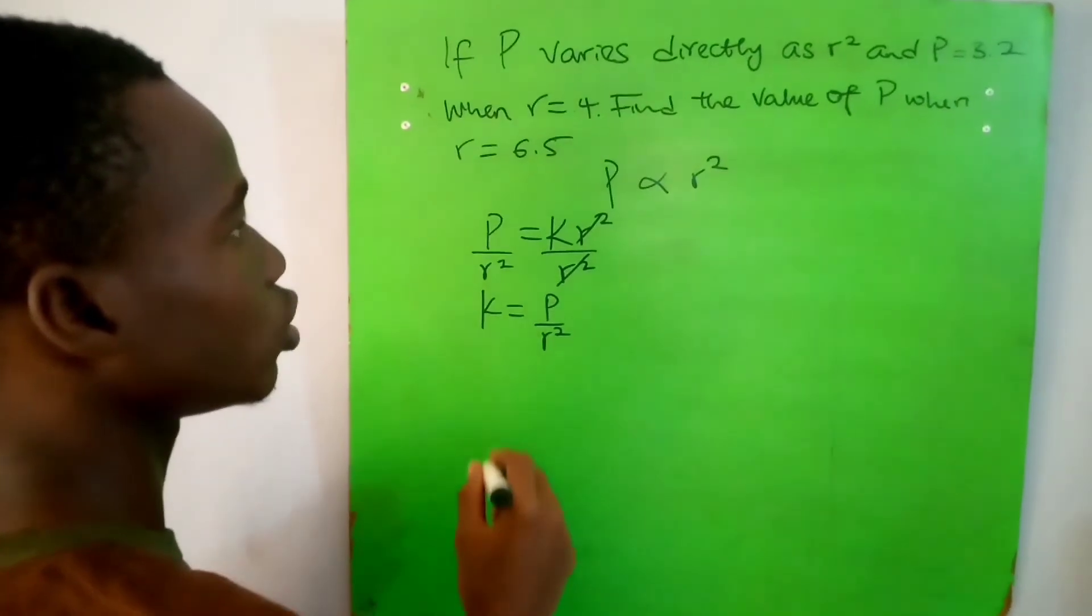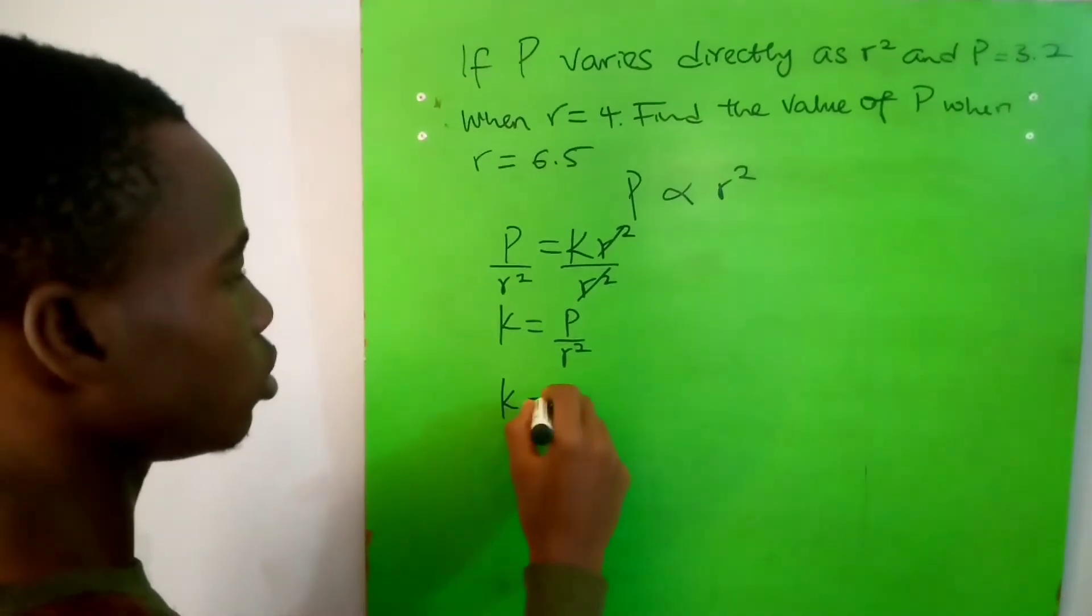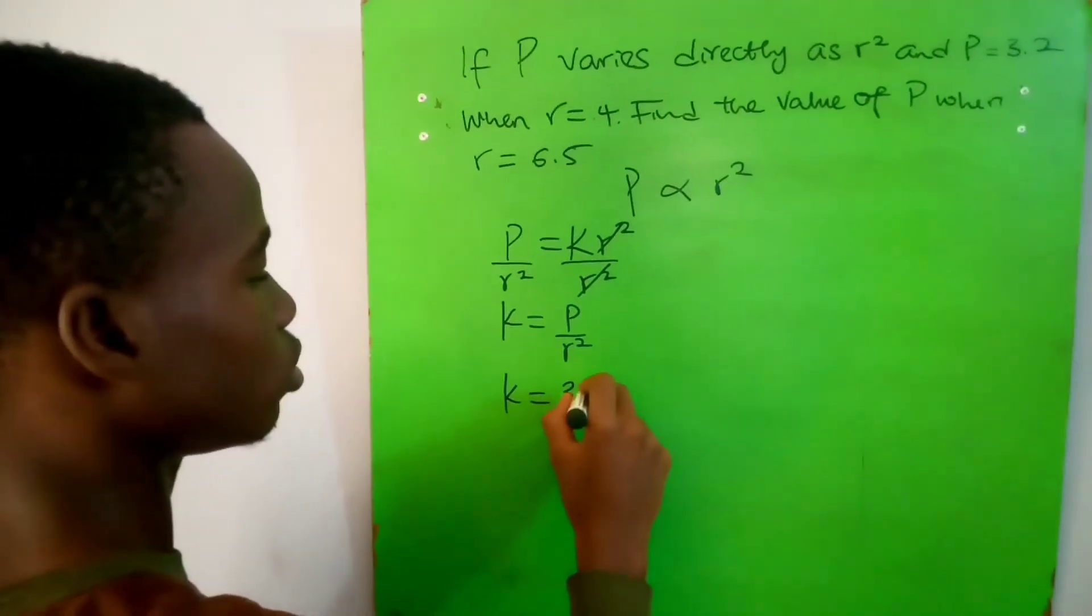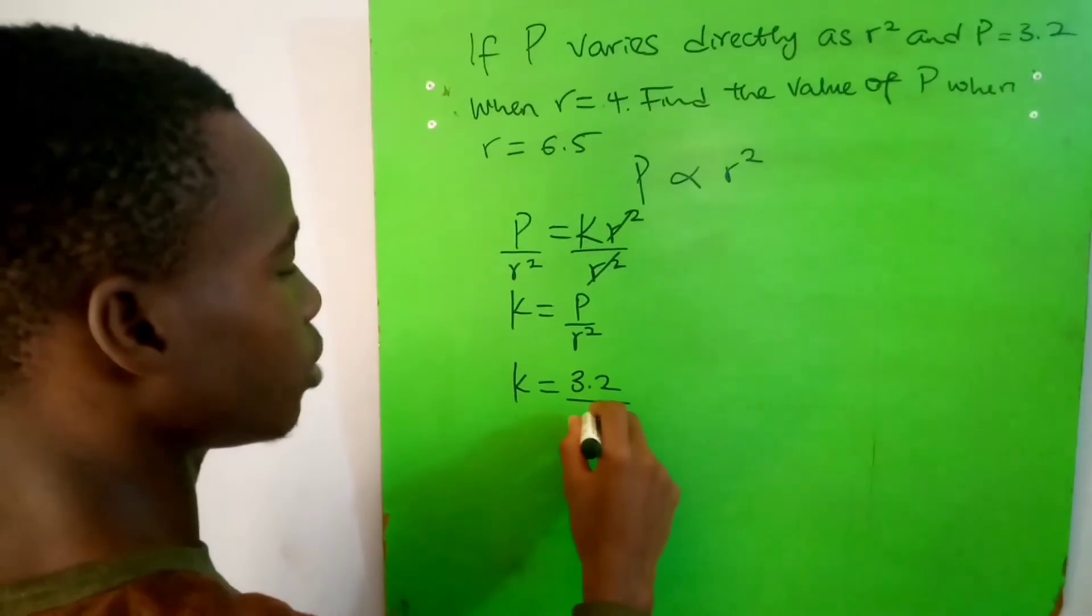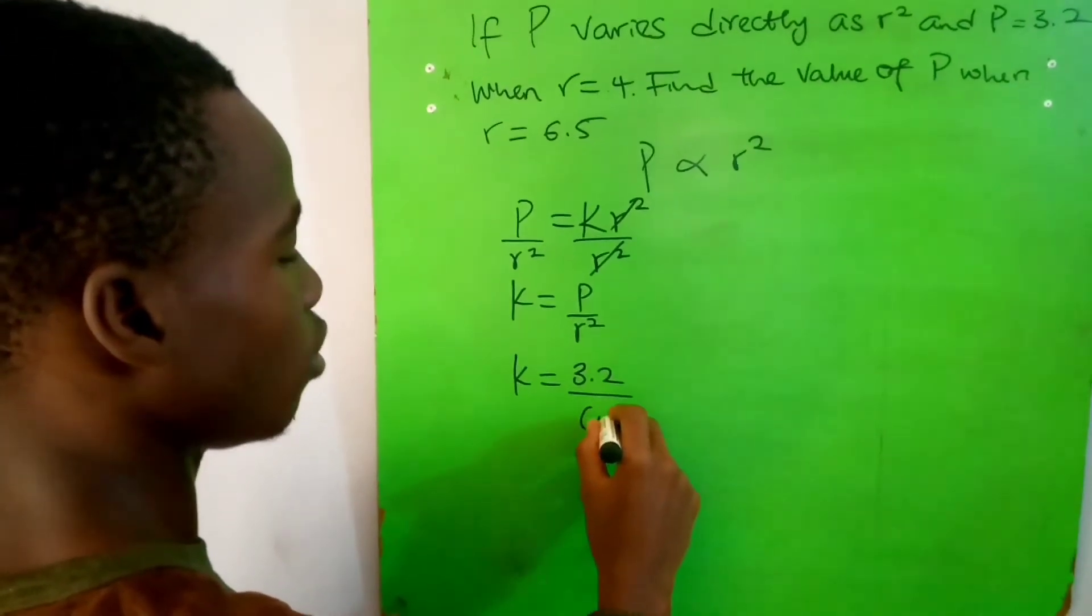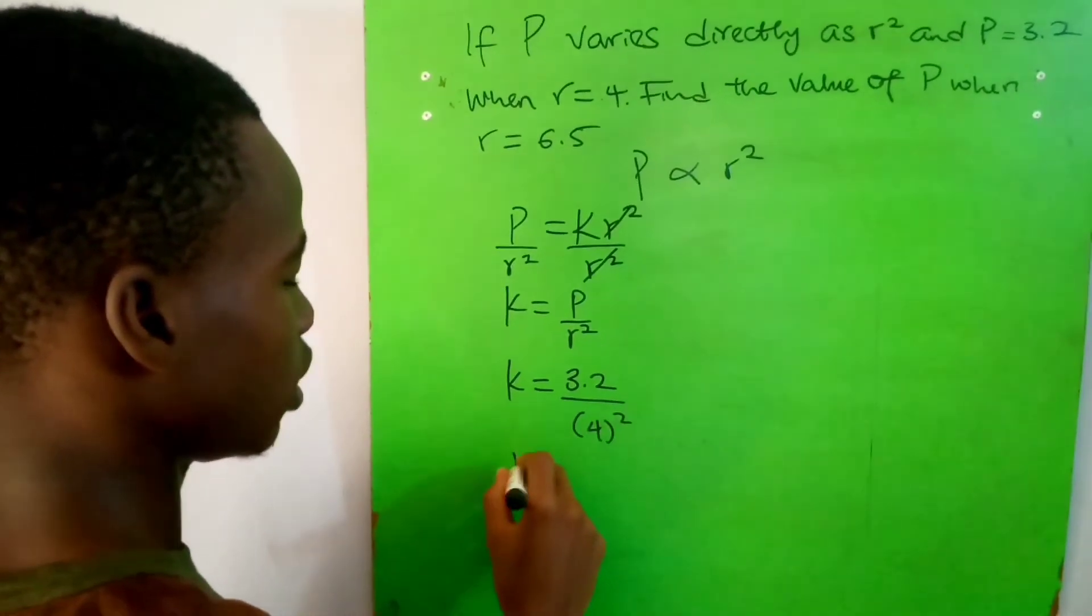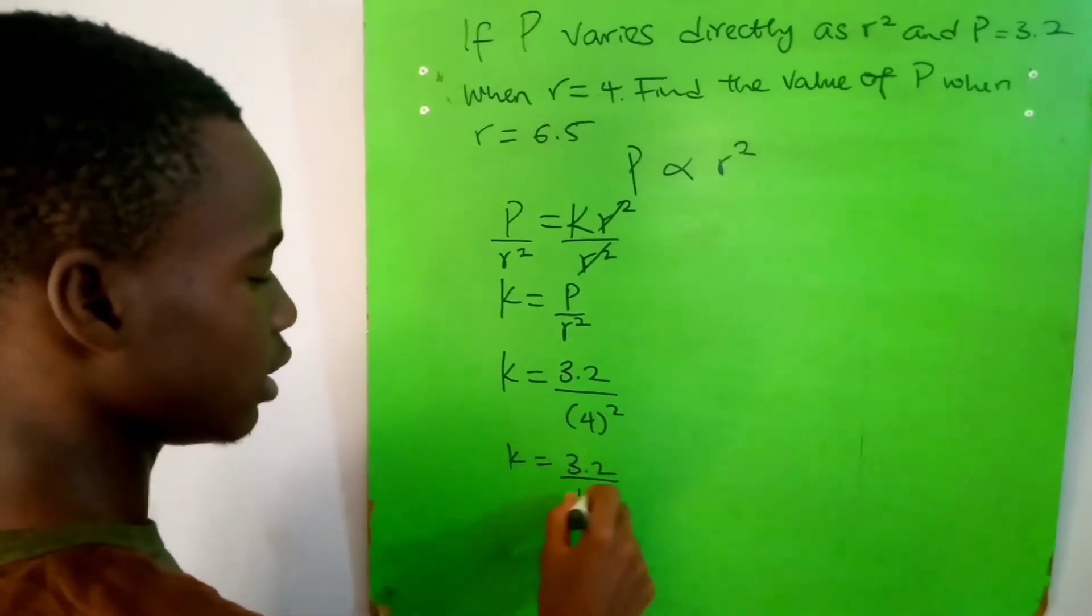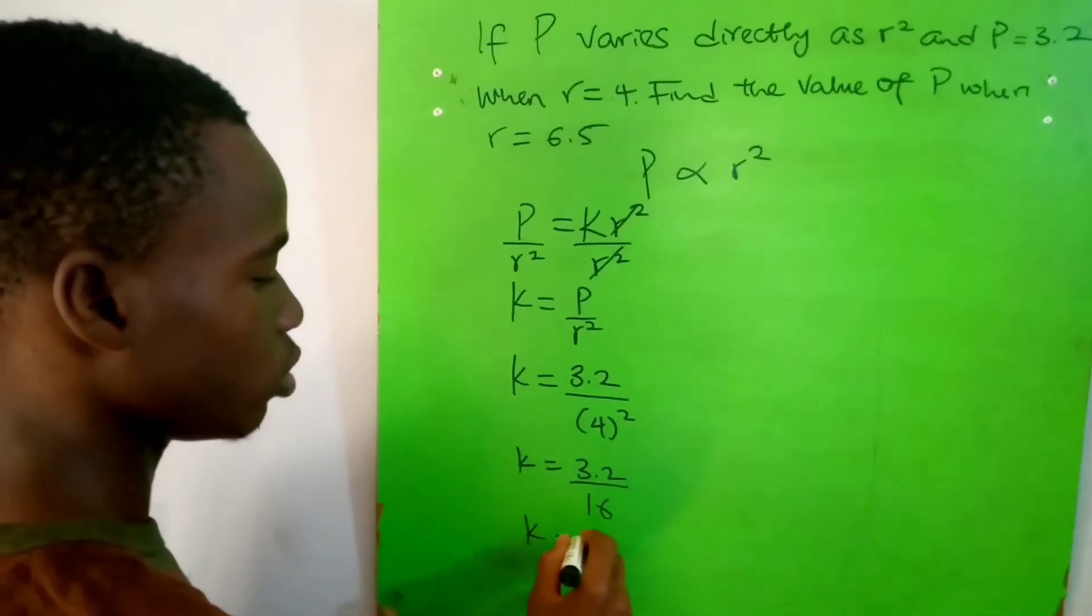k equals P over r squared. What's the value of P? We have 3.2 over r squared. The value of r is 4 squared, so k equals 3.2 over 16. k equals 0.2. So I found the value of k.